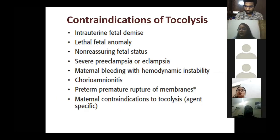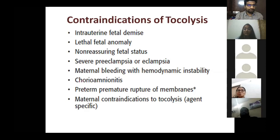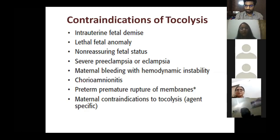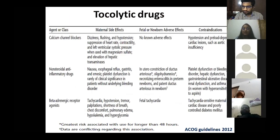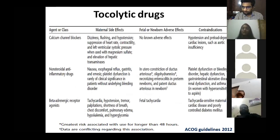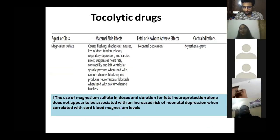Contraindications to tocolysis include non-viable fetus or lethal anomalies, and situations where prolonging pregnancy is undesirable: severe preeclampsia, eclampsia, hemodynamically unstable mother, chorioamnionitis, PPROM (not indicated), or specific contraindications to the tocolytic drug. Drug categories include calcium channel blockers, which are best overall, and indomethacin — an oxytocin antagonist — which can be given only before 32 weeks. Magnesium sulfate has no role in tocolysis; its role is neuroprotection.